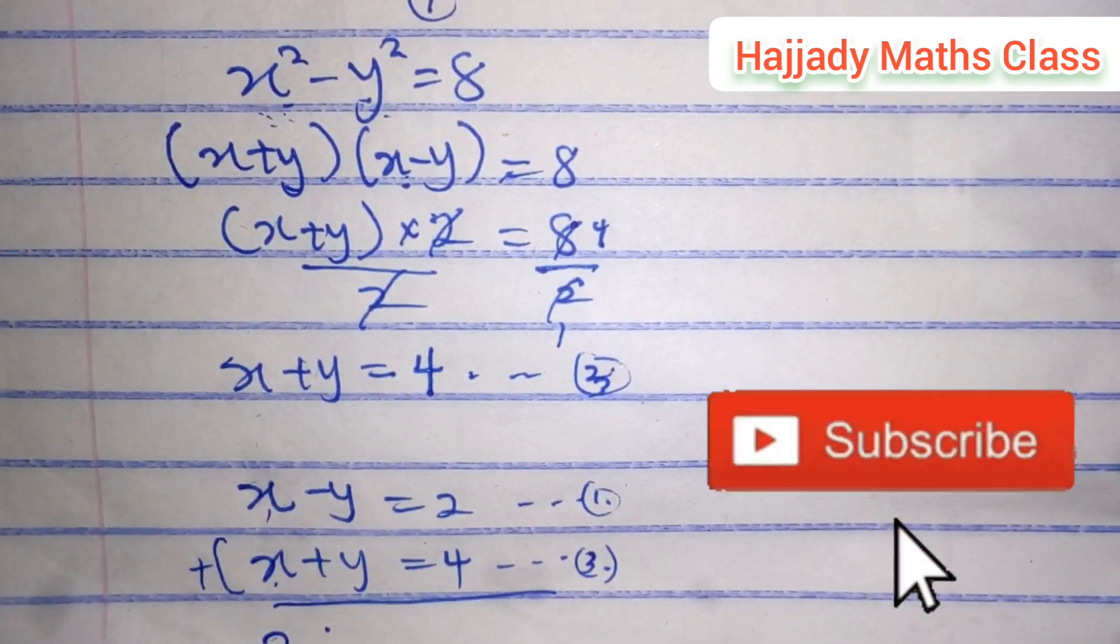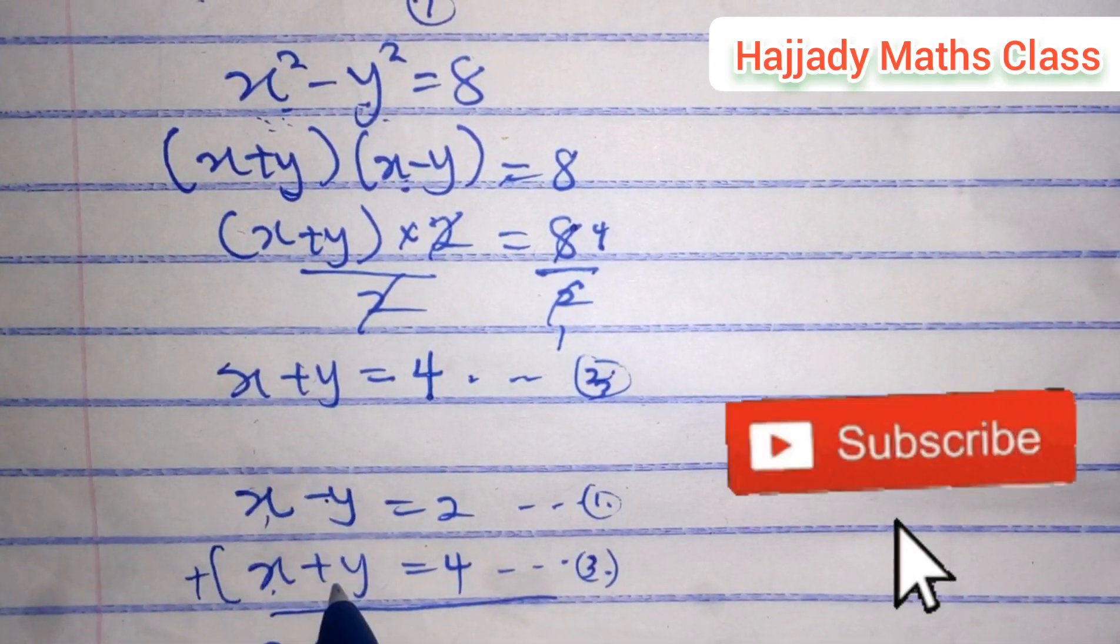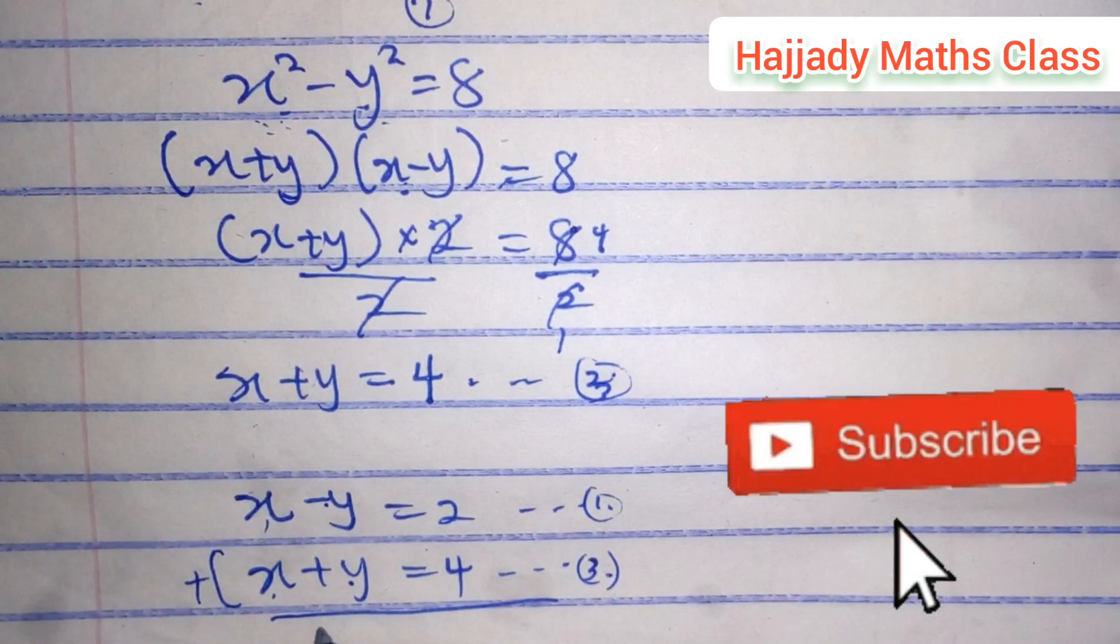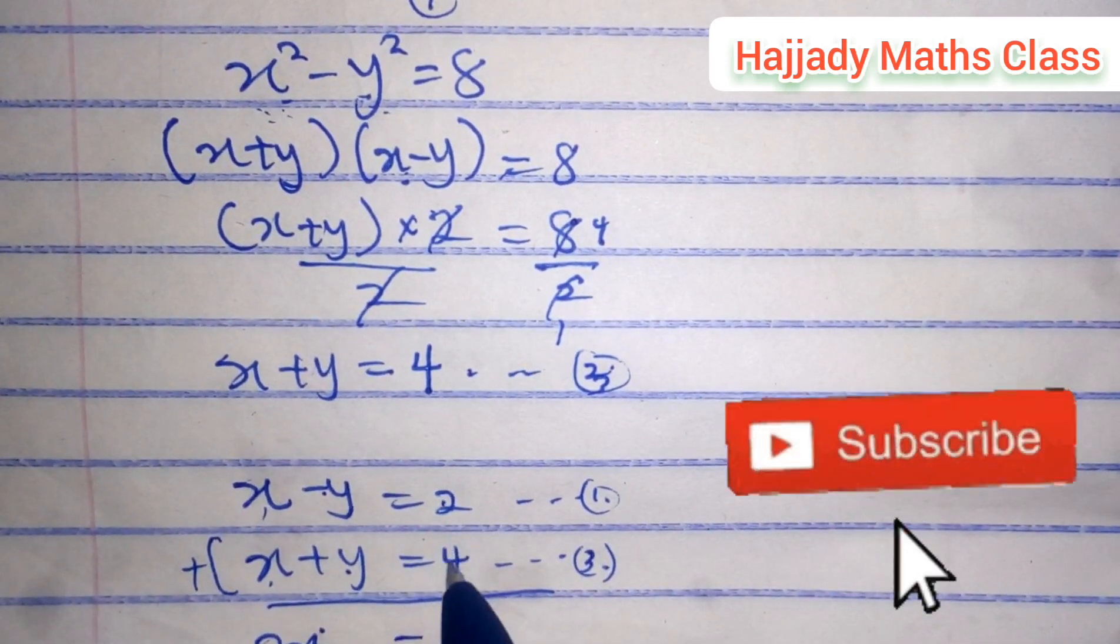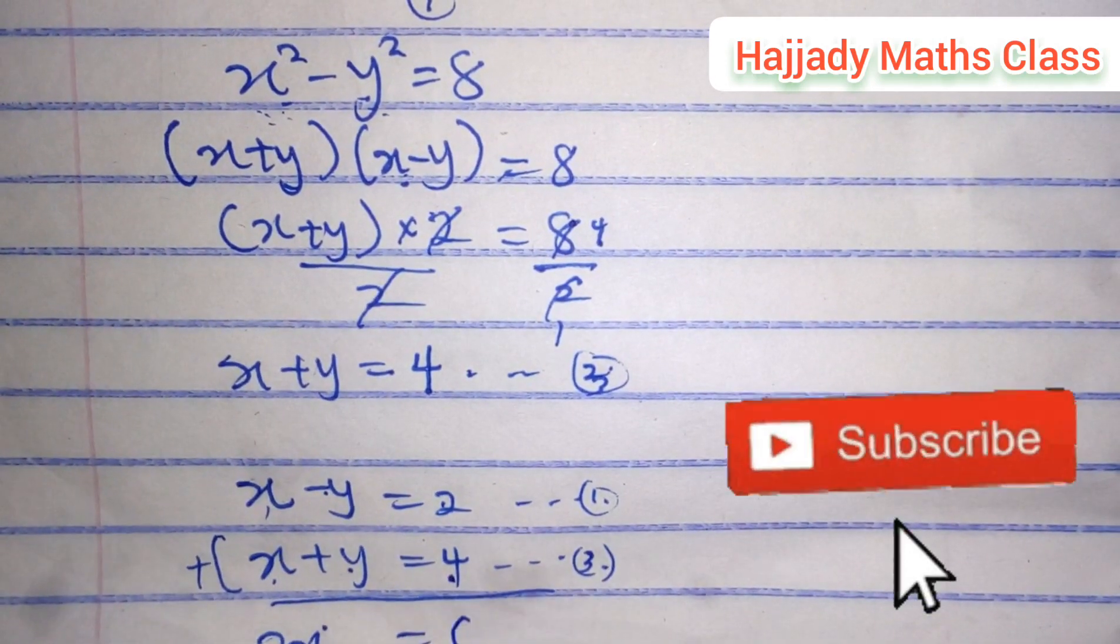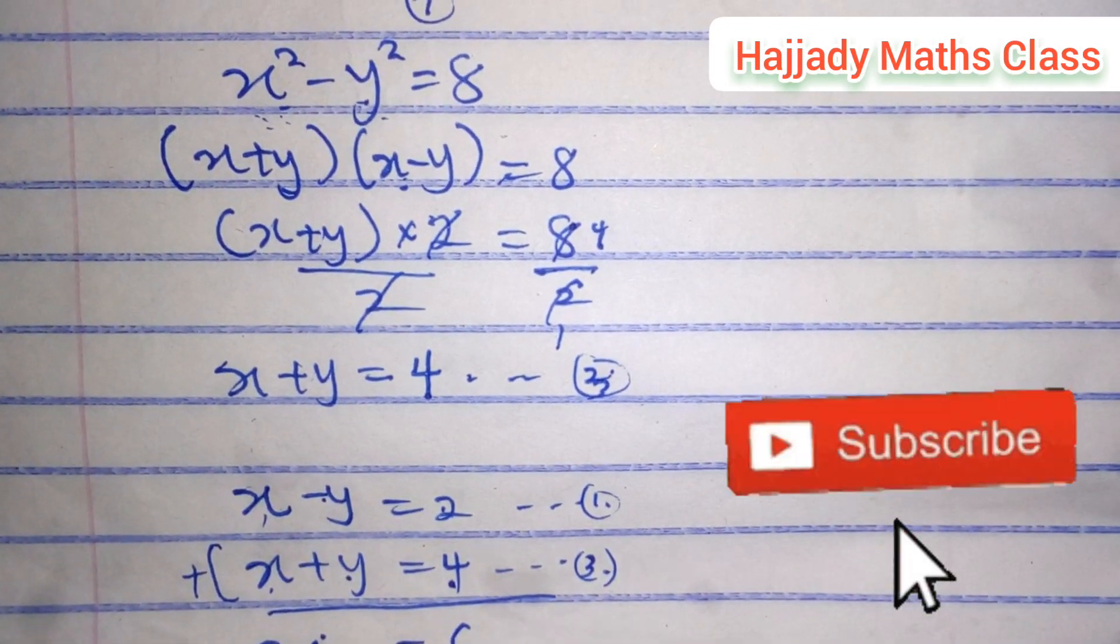x plus x gives what? 2x. Minus y plus y cancel out. They have been eliminated. 2 plus 4 gives 6. So we have 2x equals 6.